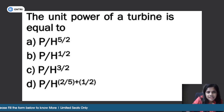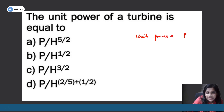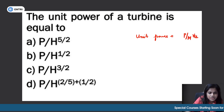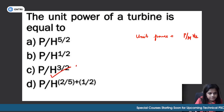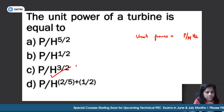The unit power of a turbine is equal to P/H^(3/2). This is the correct formula for unit power.